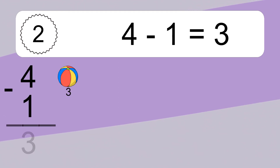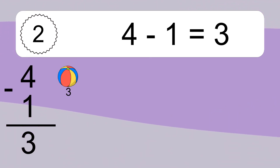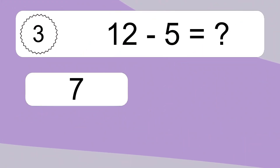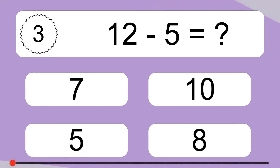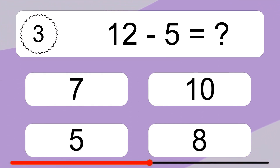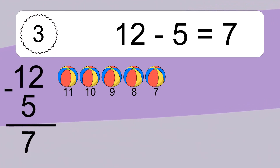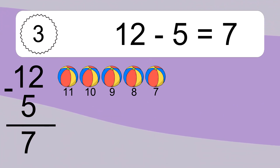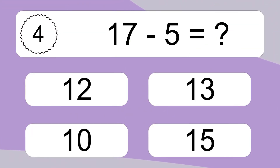4 minus 1 equals what? 4 minus 1 equals 3. Let's count it: 3. 12 minus 5 equals what? 12 minus 5 equals 7. Let's count it: 11, 10, 9, 8, 7.